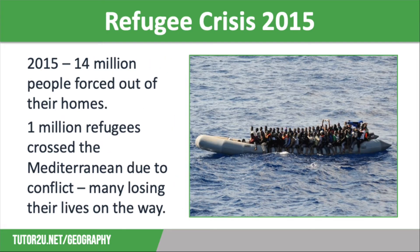Figures for international migration reached a peak in 2015, with 14 million people being forced out of their homes because of poverty or conflict in regions such as Northern Africa and the Middle East. Over 1 million refugees from Syria, Afghanistan and Iraq crossed the Mediterranean Sea between January 2015 and March 2016. All three of these countries have suffered conflict, which has affected their level of development.